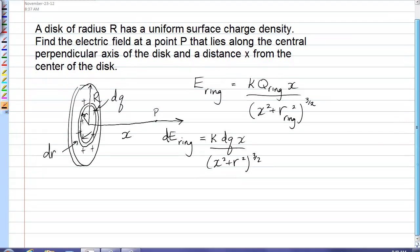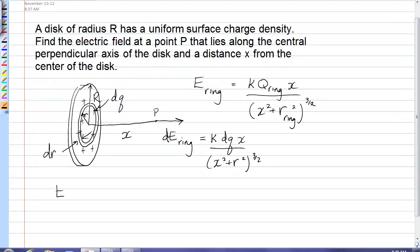Now to get the field of the disk, we integrate or add all the fields due to the ring, and the direction is going to be in the i hat direction. So the integral that we're doing,